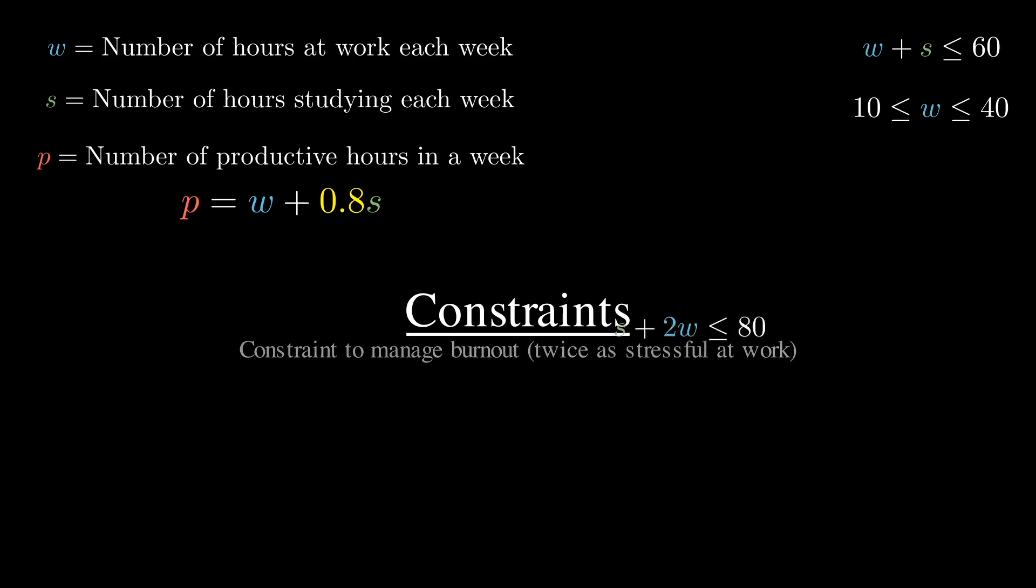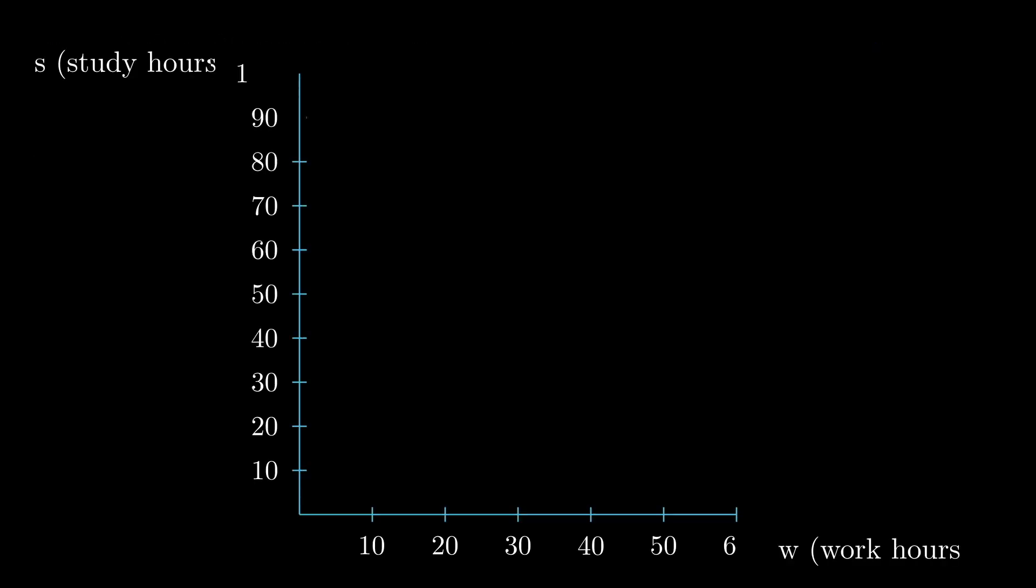By the way, it's sort of implied that s and w both have to be at least 0. It doesn't make sense to spend any negative time studying or working, at least in the context of our problem. Now that we have all the constraints, the nice thing is we can graph them all together and come up with our so-called feasibility region. Looking at our ws-plane, we only need to worry about positive values for w and s. That's the first quadrant.